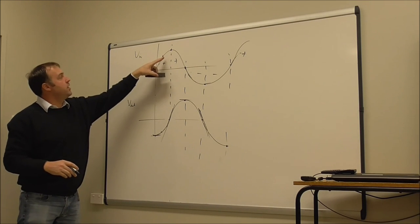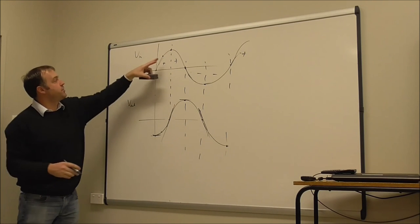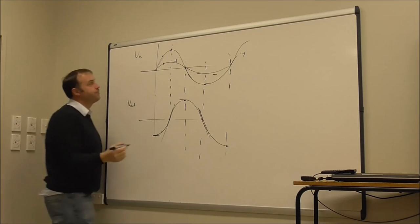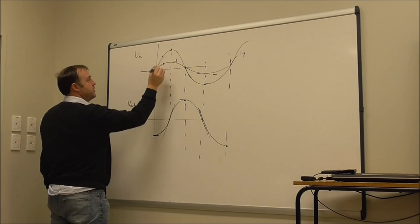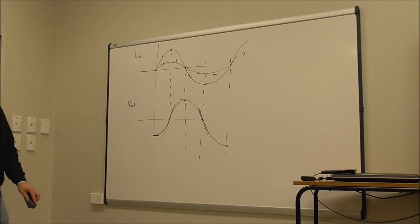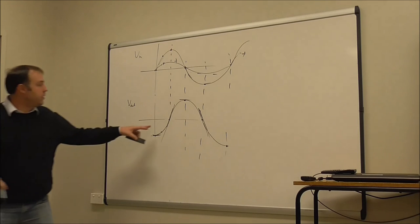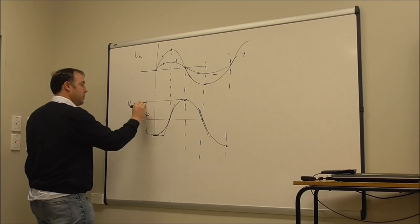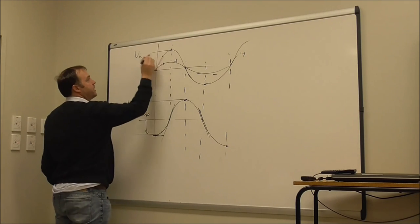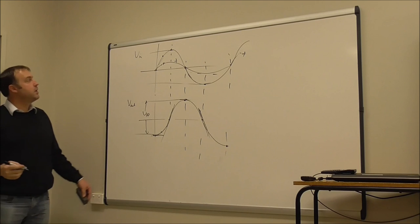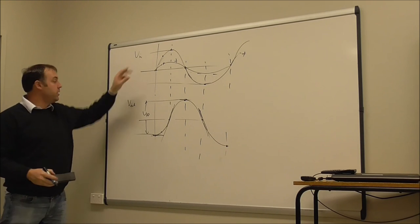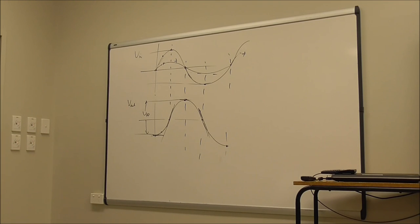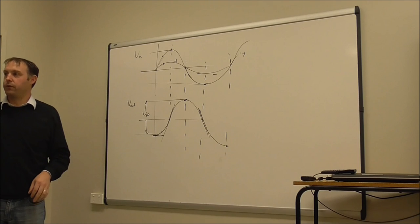The resistor's voltage is proportional to the current flowing through the circuit, so it looks the same shape as the input but smaller — and the sum of the resistor and capacitor voltages always adds up to the input voltage. At the cutoff frequency, the peak-to-peak voltage across the capacitor is only 0.707 of the peak-to-peak input voltage, but the instantaneous voltages still add up to the input voltage.